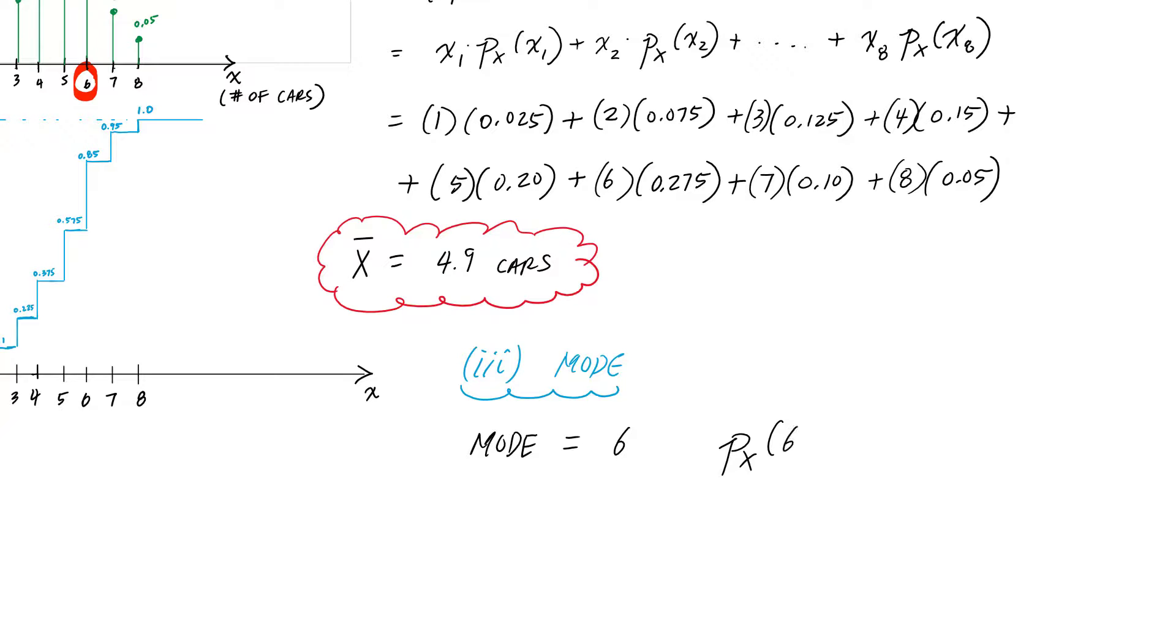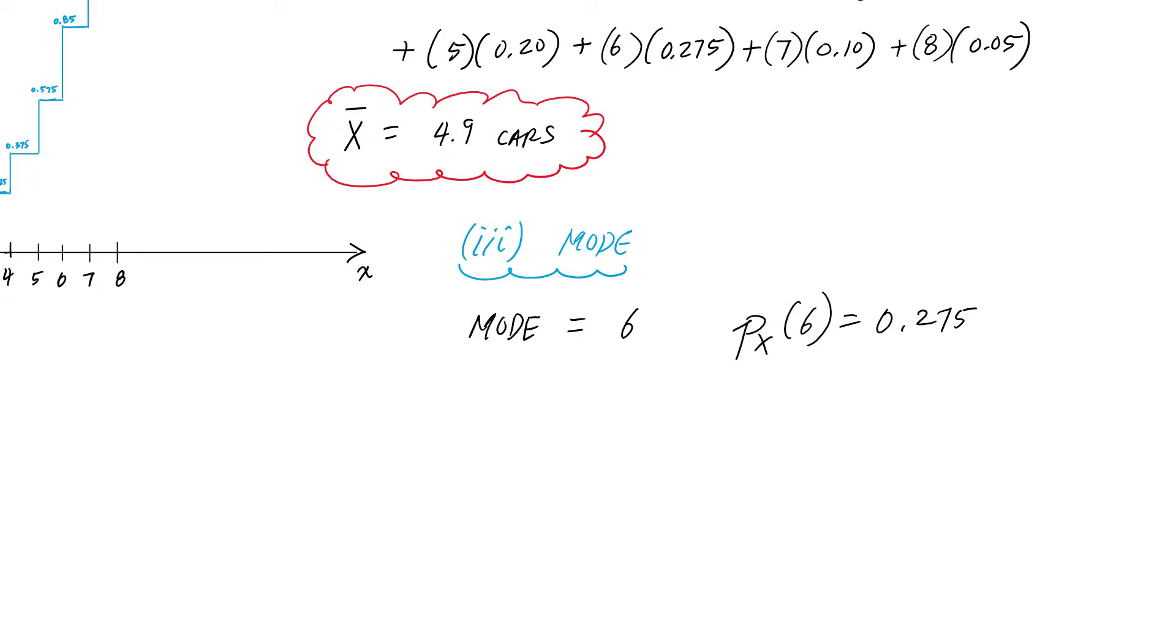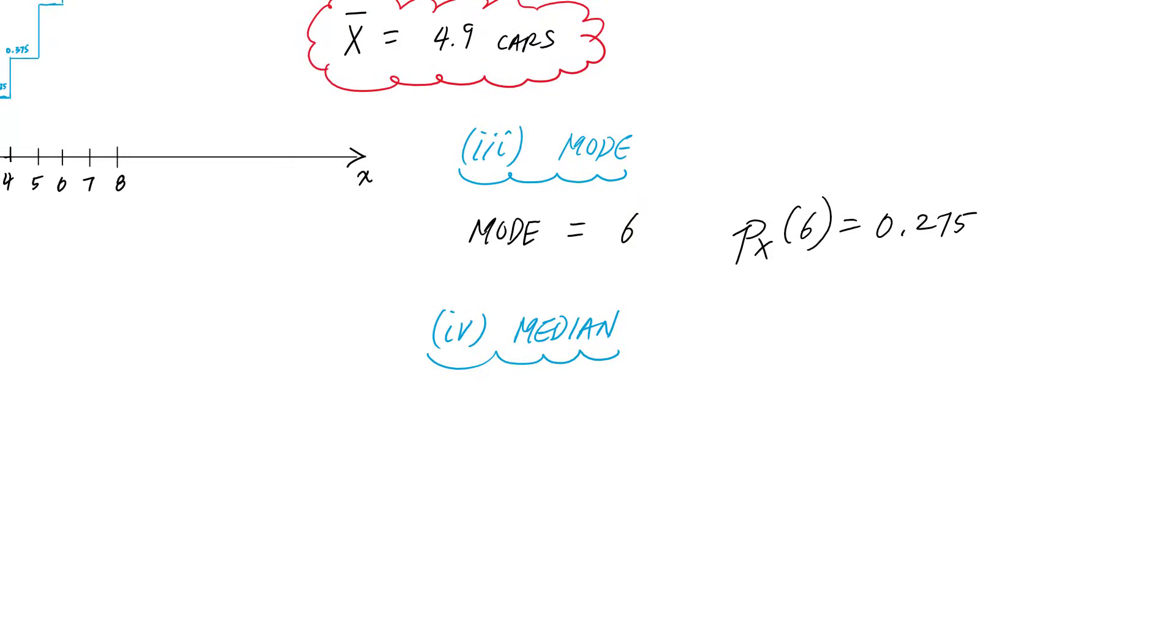The median is the outcome associated with a cumulative probability of 0.5, or the probability of X less than or equal to x equals 0.5. We're looking for that middle value.